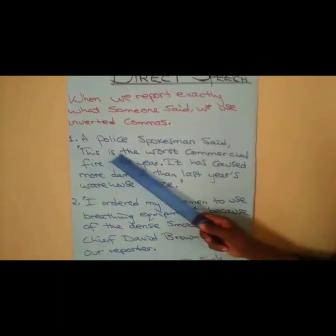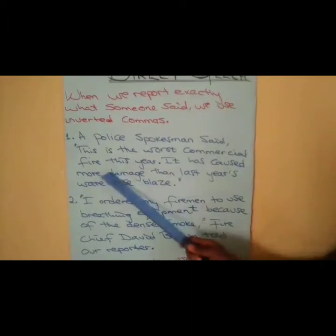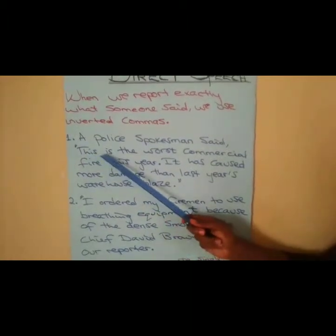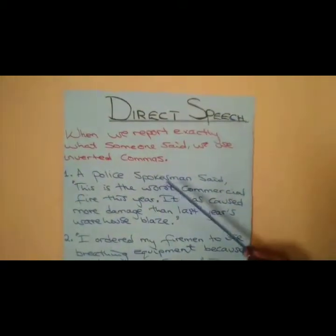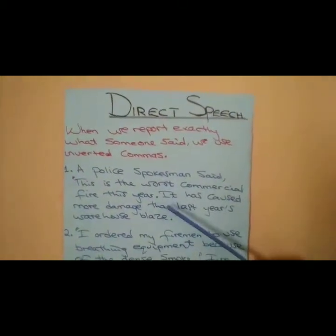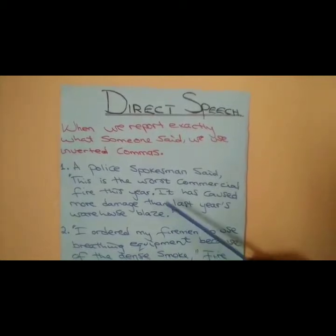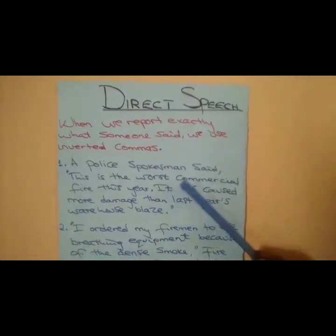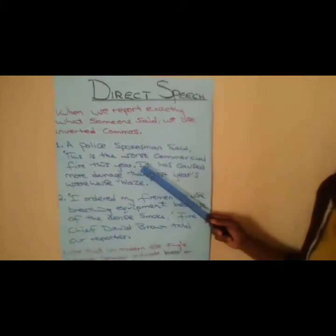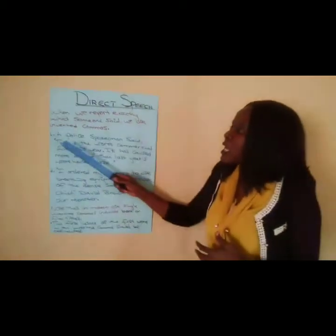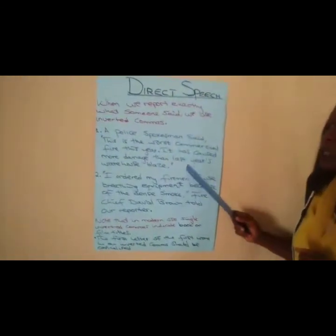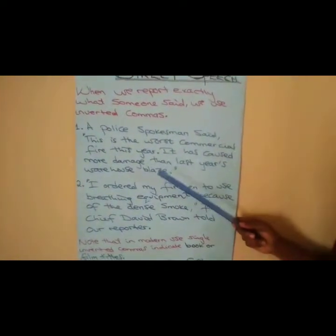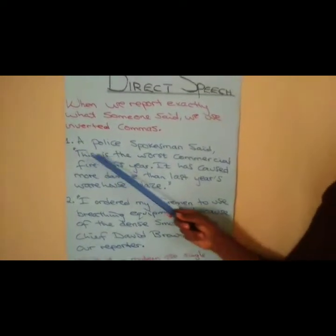When you look at 'this is the worst commercial fire,' you notice that 'this is' is in present tense because it is direct speech — you are saying the words exactly as the person said them. The only way we can tell it is a speech is by noting 'a police spokesman said,' which tells us you are talking about what someone else said. In direct speech, it will be in the present tense as when the person used those words.